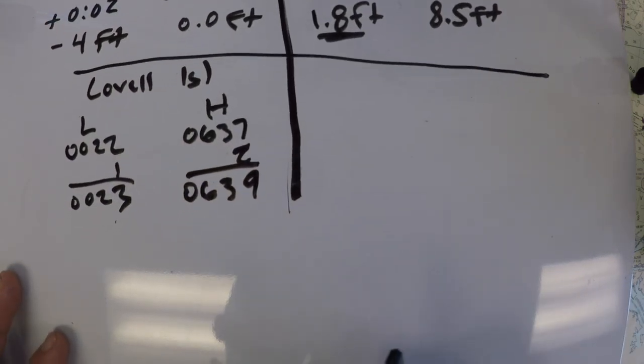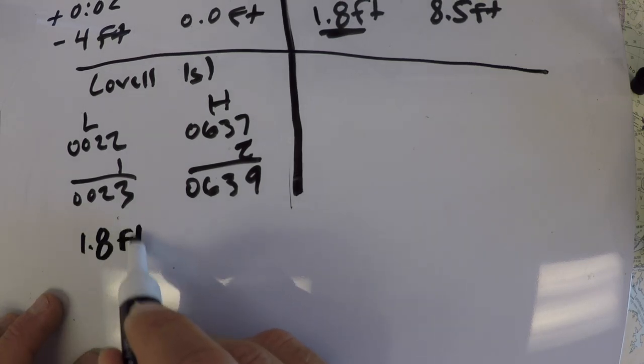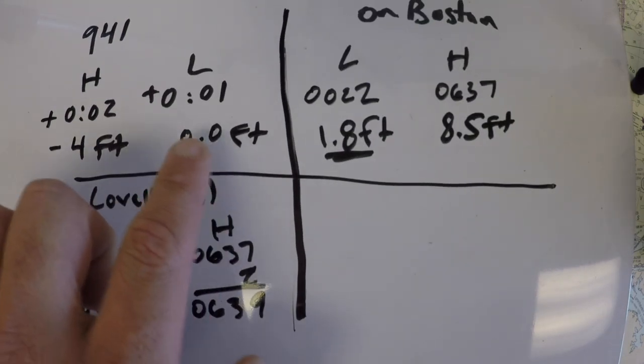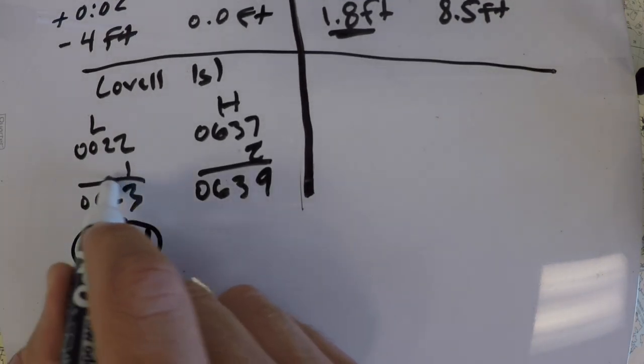And then the differences for height, I'm just going to move down a little bit on the screen. For the low, it's 1.8 feet. And there's no change to the tide there. So we've got 1.8 feet at 0023.